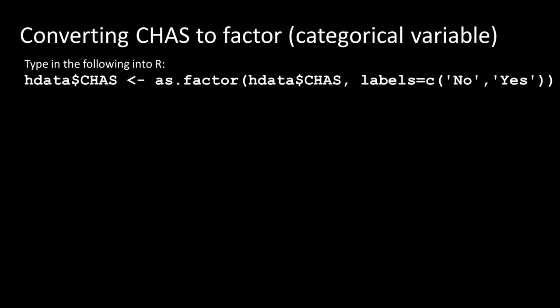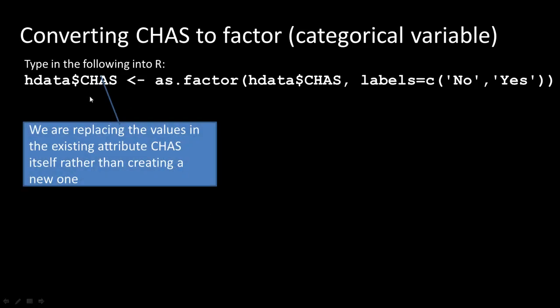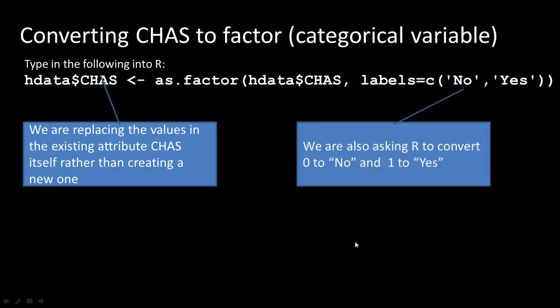There's no sense in typing that command because I'll show you a good way to do it in R Commander. What we're trying to say with that command is: take the variable hdata$chas — using the dollar sign to refer to a field in a data frame — and replace it with as.factor(hdata$chas, labels=c('no','yes')). This converts zero to 'no' and one to 'yes' and replaces all existing values. But much more easily, you can do it in R Commander.